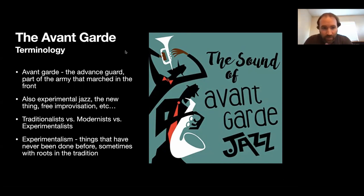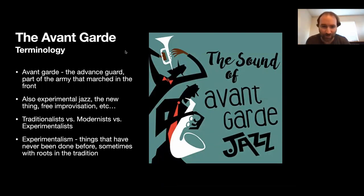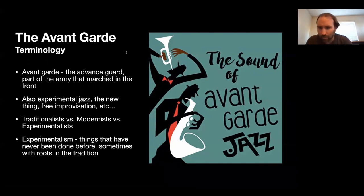The avant-garde is another name people have referred to this music as — it's French for the advanced guard or part of the army that marched in front. This term is still used in visual art, theater, and film. There's also 'the new thing,' 'free improvisation' — which isn't always jazz-related but in a Venn diagram has overlap with jazz.